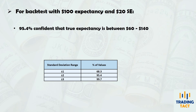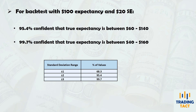Let's apply this to our backtest. If your expectancy is $100 and your standard error is $20, you can be 95% confident that your strategy's true expectancy lies between $60 and $160 — which is plus or minus two standard errors. Likewise, you can be almost 100% confident that your strategy's true expectancy lies between $40 and $160.